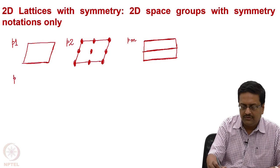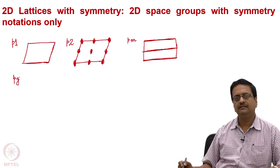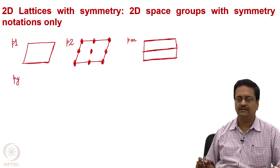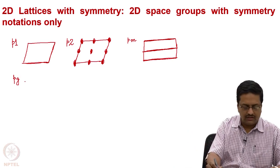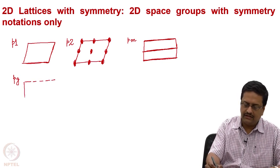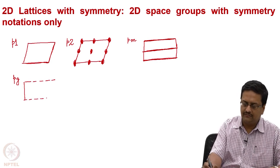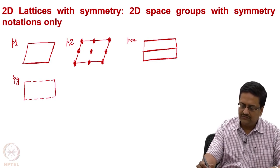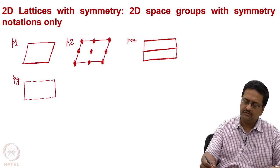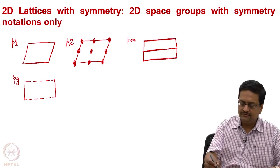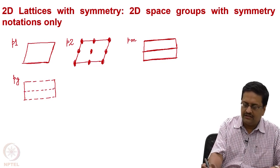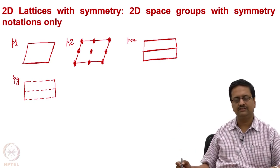Let us try to draw Pg. 'G' is a glide plane, and this glide plane runs in the horizontal direction in a rectangular lattice. The vertical lines are just lines and are not mirrors, so I am not making them bold. The up and down edges indicate the glide. Again, a glide plane is further generated in the middle of this unit cell, and this is the notation for Pg.